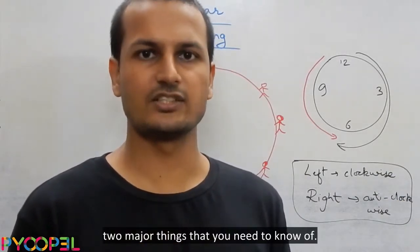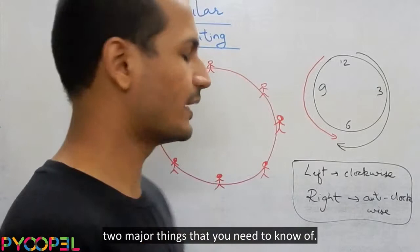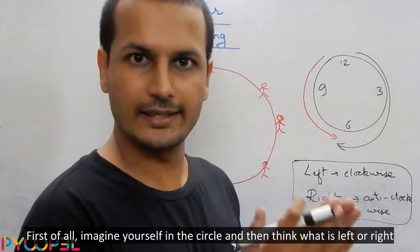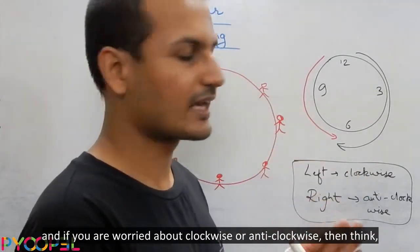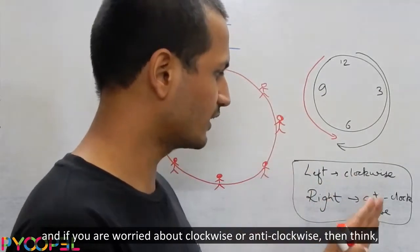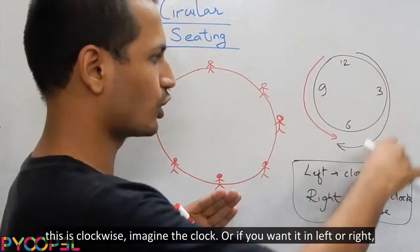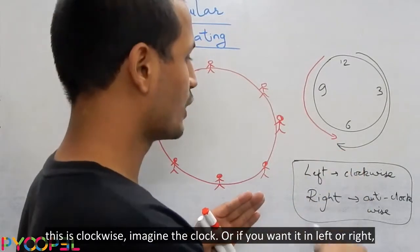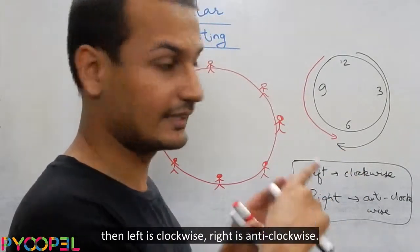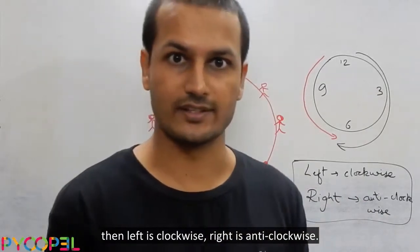These are the two major things that you need to know of. First of all, imagine yourself in the circle and then think of what is left or right. And if you are worried about clockwise or anticlockwise, then think this is clockwise, imagine the clock or if you want it in left and right, then left is clockwise, right is anticlockwise.